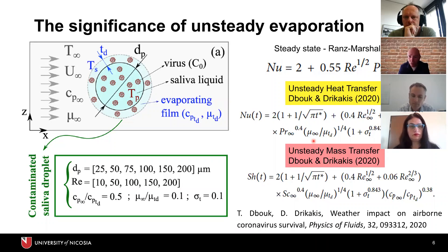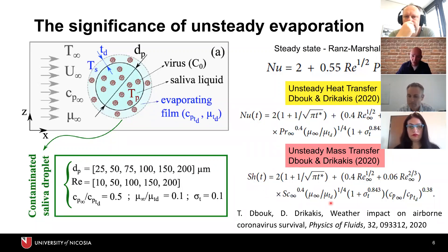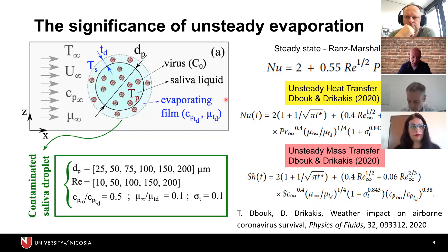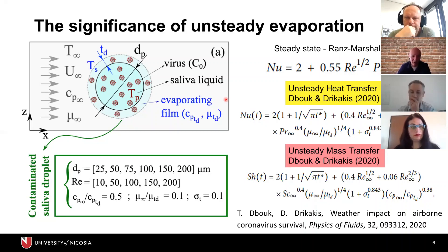We developed new formulas — a summary of the Nusselt number for steady heat transfer and the Sherwood number for steady mass transfer. These formulas were developed through a number of simulations concerning saliva droplets as carriers of the virus, modeling COVID-19 through some thermodynamic properties. There are five papers published in Physics of Fluids where all the information can be found; here I give a very brief summary of the key points.